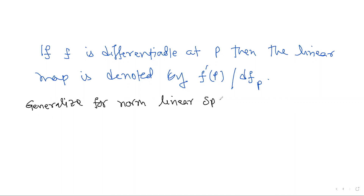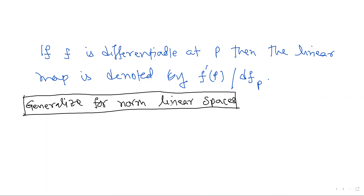Since this definition uses only the concepts of sum, difference, and norm, it can be generalized to any normed linear space. So if you have a map between two normed linear spaces, you can generalize this definition and define the derivative there as well. Now, since a linear map is totally determined by its matrix with respect to bases of the domain and codomain, a natural question arises about what that matrix looks like.